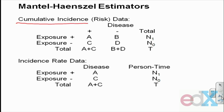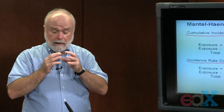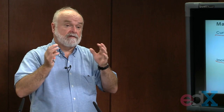If you have a cohort study, remember it could be closed or open. If it's closed, you could measure cumulative incidence and display your data in a two-by-two table, measuring risk ratios and odds ratios. If your cohort were open, you'd be measuring incidence rates — person time among the exposed, person time among the non-exposed — and measuring rate ratios. The formula for the adjusted risk ratio using Mantel-Haenszel is the same as the formula for the adjusted rate ratio.